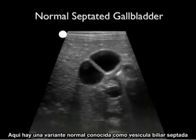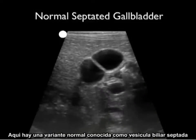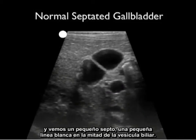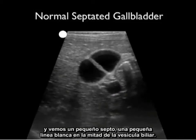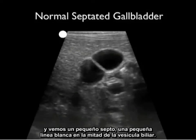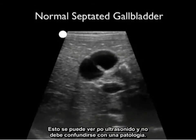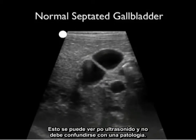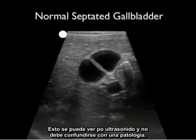Here's a normal variant known as a septated gallbladder. We see a little septum — a thin white line going through the middle of the gallbladder. This can be seen on bedside sonography and is not to be mistaken as pathology.